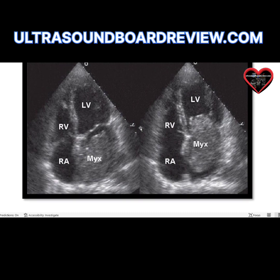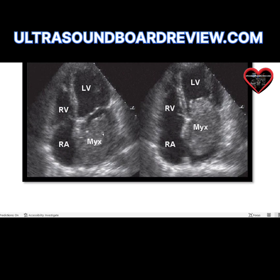Here's a good example of a myxoma. Here's systole and here's diastole. You can see that in diastole, this tumor is protruding or invading the left ventricle. If you just have a still image and it says what structure is in the left atrium, you can see that this tumor is attached to the fossa ovalis — it's pretty easy to identify. You can see how globular and homogeneous it is, as well as really smooth, with that smooth texture.